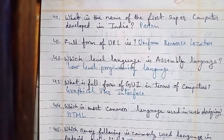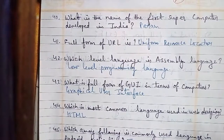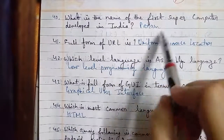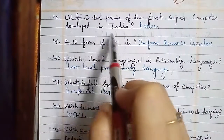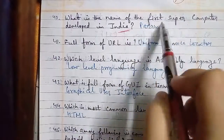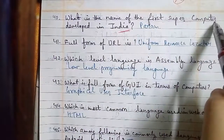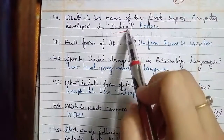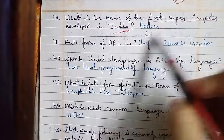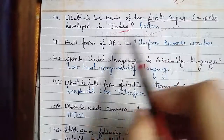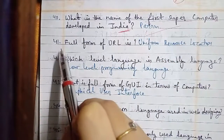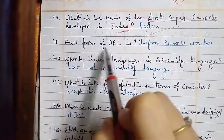Today's class starts with question number 48, which is related to computers. What is the name of the first supercomputer developed in India? The answer is PARAM. Moving to question number 41: what is the full form of URL?